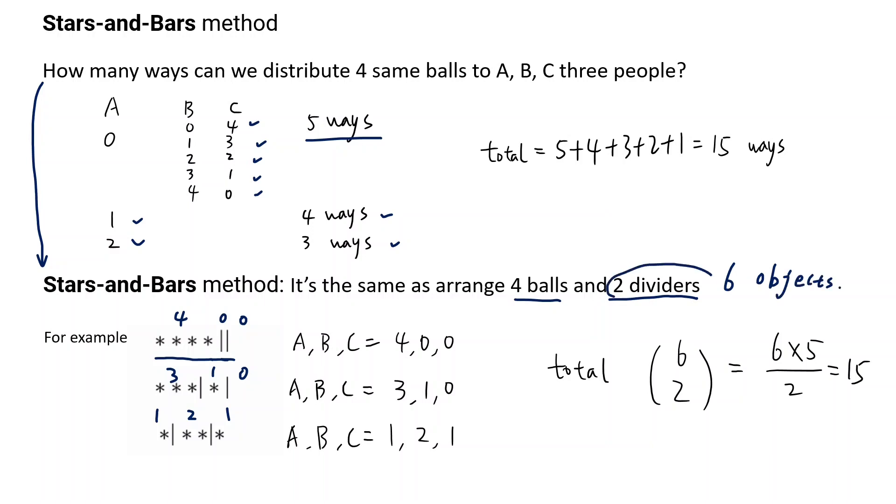There are two dividers. Basically, we are thinking in those six objects, which two places should be put as dividers. It's choose two out of six, which is 15.